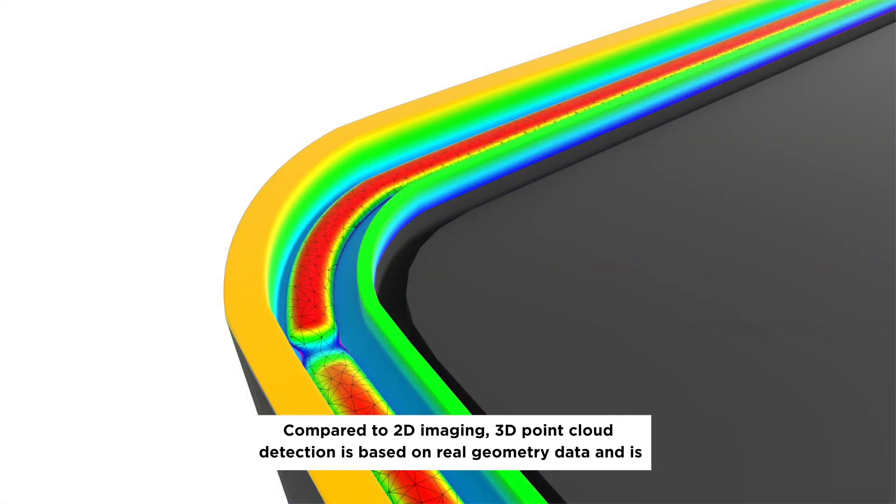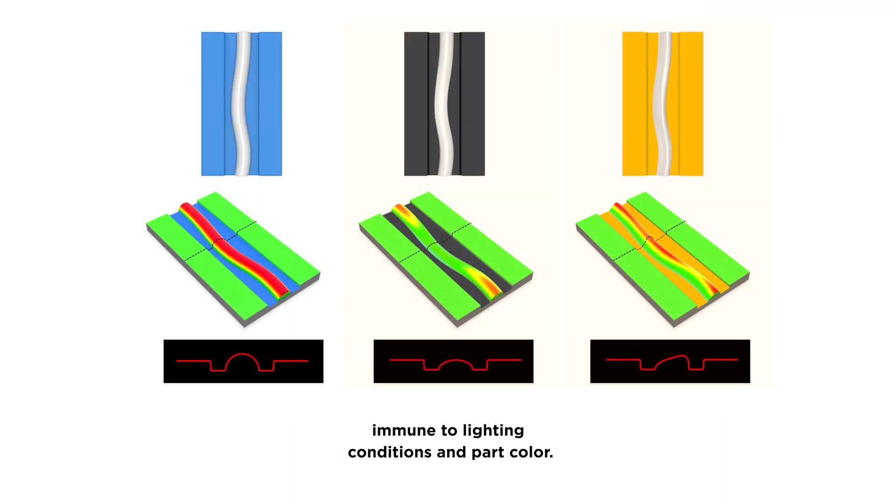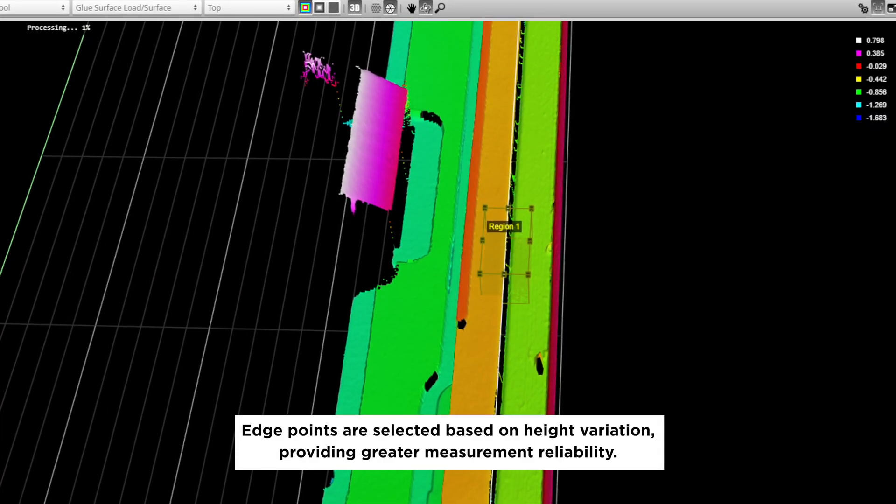Compared to 2D imaging, 3D point cloud detection is based on real geometry data and is immune to lighting conditions and part color. Edge points are selected based on height variation, providing greater measurement reliability.